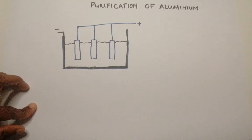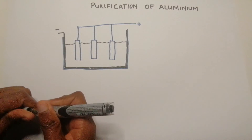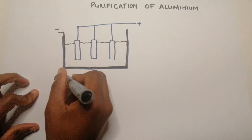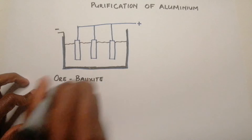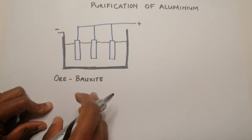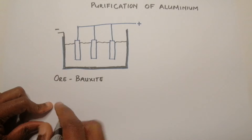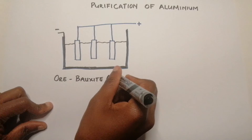This is another application of the electrolytic cell. What we need to learn about aluminium is that it does not occur as a free metal. It is extracted as an ore, and we call that ore bauxite. So the ore of aluminium is simply referred to as bauxite. In simplified terms, it is a hydrated aluminium oxide — Al₂O₃.